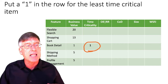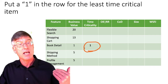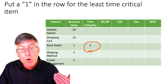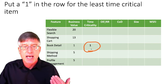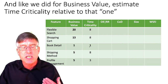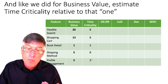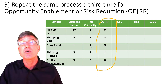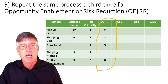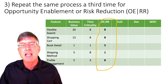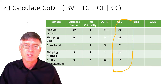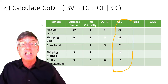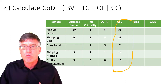Then we move on to time criticality and work on that column by itself. In this case, book detail also has the least time criticality. We go through the other items and say, relative to book detail, what is their time criticality? Profile management has three times more time criticality than book detail. Flexible search, shopping cart, and shipping method have eight times more. We do the same thing for opportunity enablement and risk reduction. Then to get the cost of delay, we sum up business value, time criticality, and opportunity enablement and risk reduction for each feature, and that gives us our numbers. That is our cost of delay — that is the value of that feature.